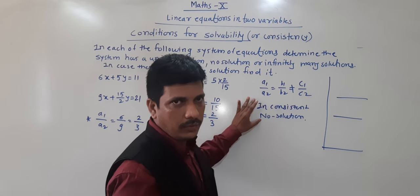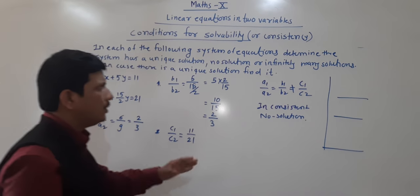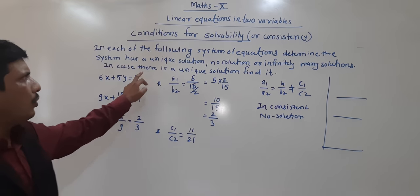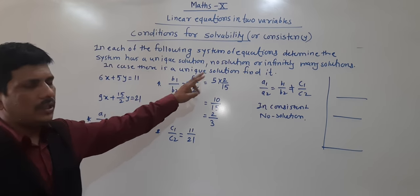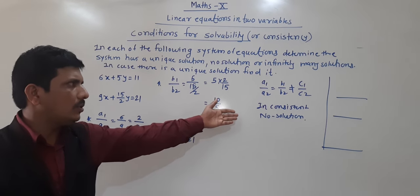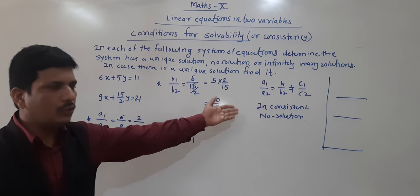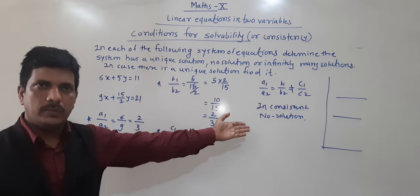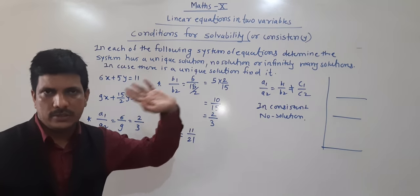According to the question, if unique solution is there then only we need to find it. This is not a unique solution — it has no solution and is inconsistent.